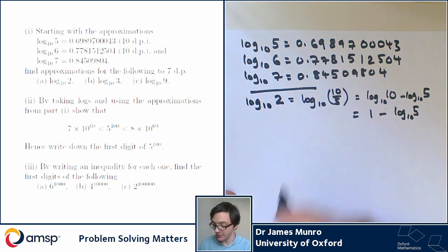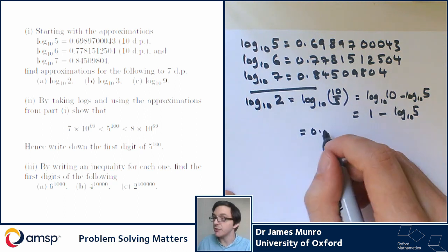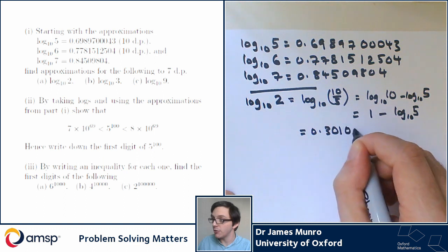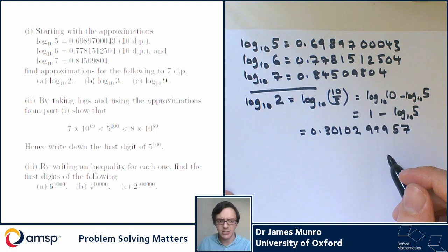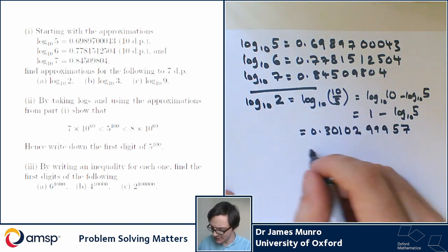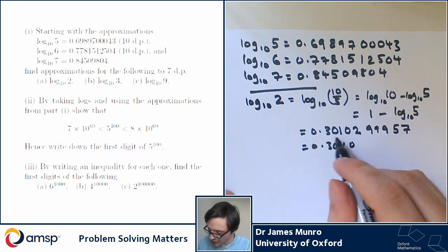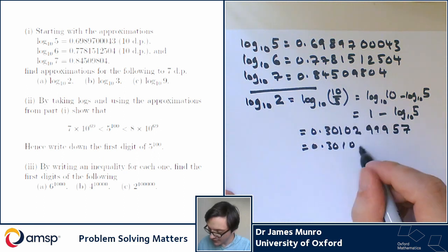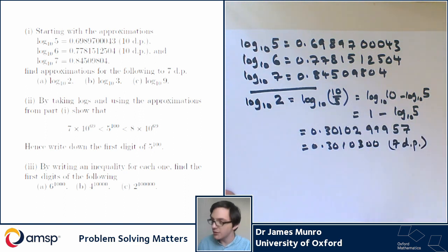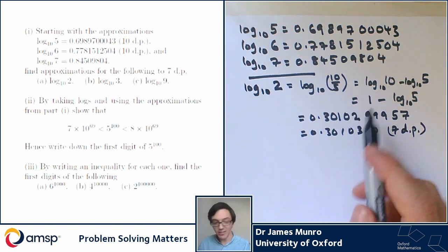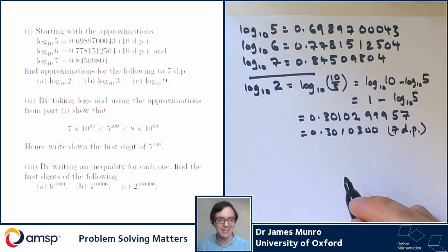So I need to take the first number given — log₁₀(5) — and do 1 minus that number. I'm not the best at doing subtraction, but doing 1.0000000 minus 0.6989700 gives 0.3010300 to 7 decimal places. So log₁₀(2) ≈ 0.3010300 to 7 decimal places. Using some facts about logarithms and then doing the subtraction — which was harder than it should have been — gives us our result.